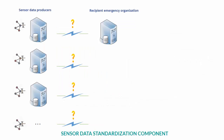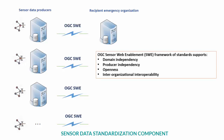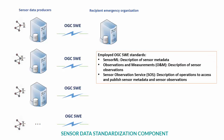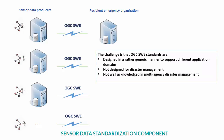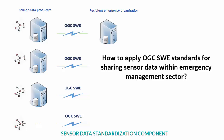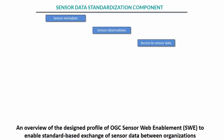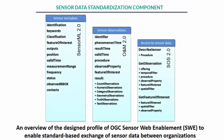To improve the current practice, which is based on using proprietary sensor protocols, the first step is to define a common language to share sensor data between stakeholders. To achieve this, the research made use of OGC Sensor Web Enablement standards, which are developed as defined standards for description and web-based access to sensor data. However, the challenge is that these OGC SWE standards are designed in a rather generic manner to support different application domains and are not designed for disaster management, nor yet acknowledged in the emergency management sector.